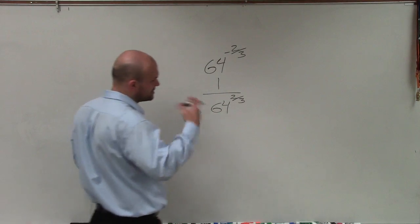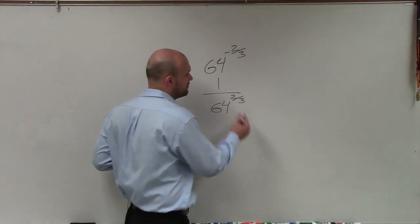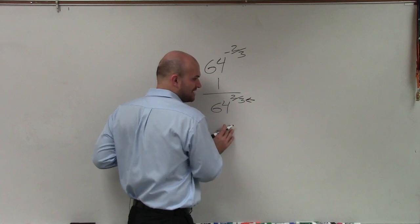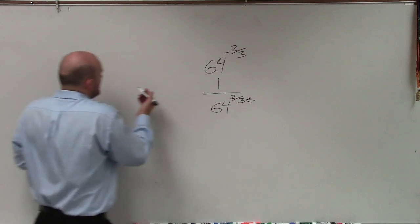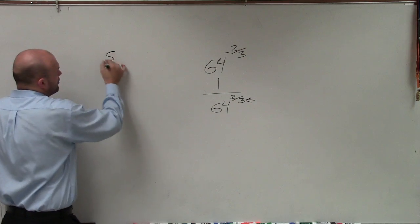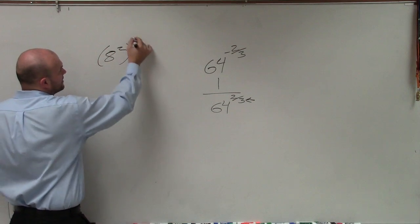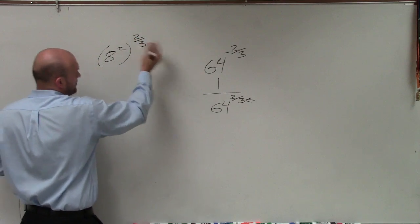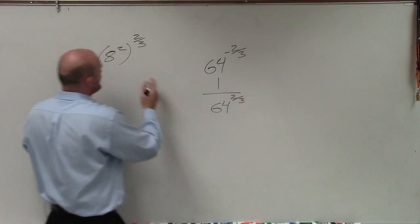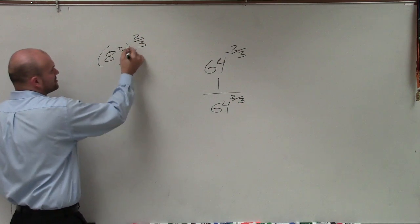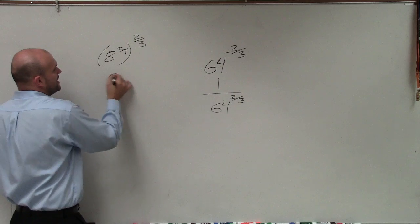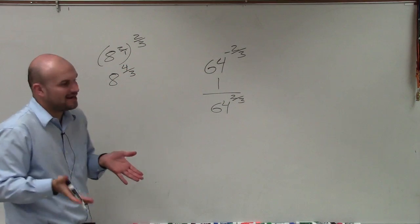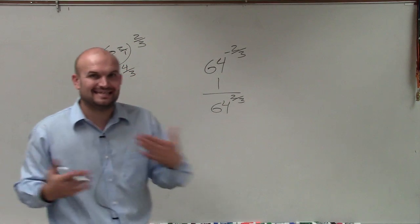The important thing is, when we're trying to simplify this, we want to write 64 to a power that's going to be the same as our denominator. Most students would say, why don't you write it as 8 squared to the 2/3 power? That would make sense, but by using our rules of exponents, we'd have 8 to the 4/3, which really doesn't make our problem any easier.